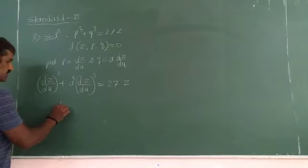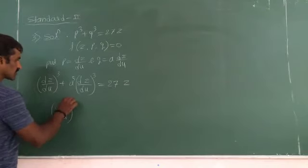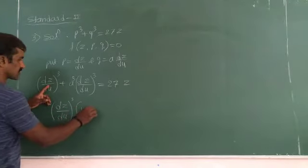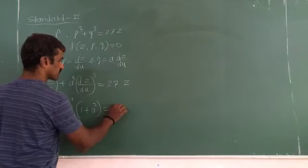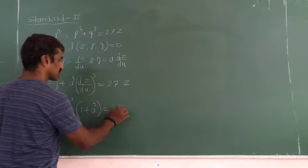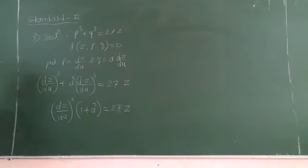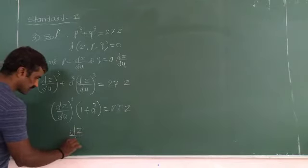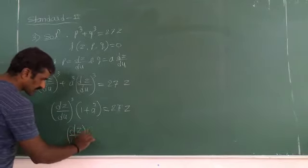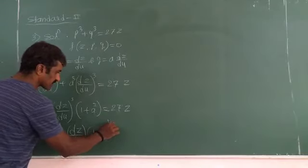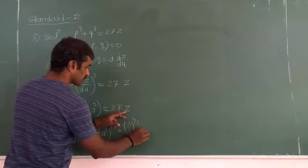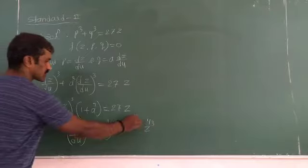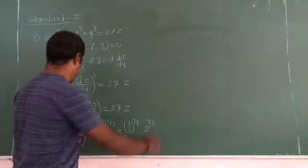So dz/du for p³ equals 27z. Raising the power 1/3 on both sides, you get dz/du into (1 + a³) raised to 1/3, so it is 3³ raised to 1/3, so into z raised to 1/3. So 3 and 3 get cancelled, right?